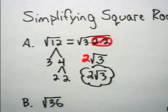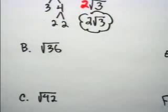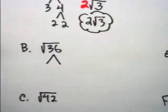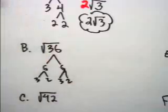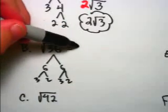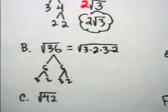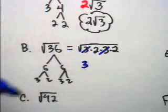Now let's look at problem B. We should pretty well know that the square root of 36 is 6. But doing it the same way — prime factor: 6 times 6, 3 times 2, 3 times 2 — so the square root of 36 is also the square root of 3 times 2 times 3 times 2. We know what the square root of 3 times 3 is: it's 3, because 3 times 3 is 9.